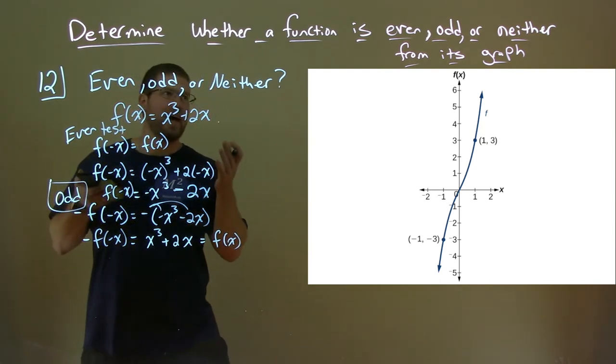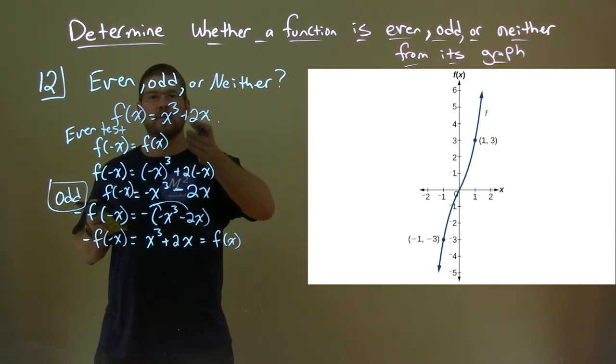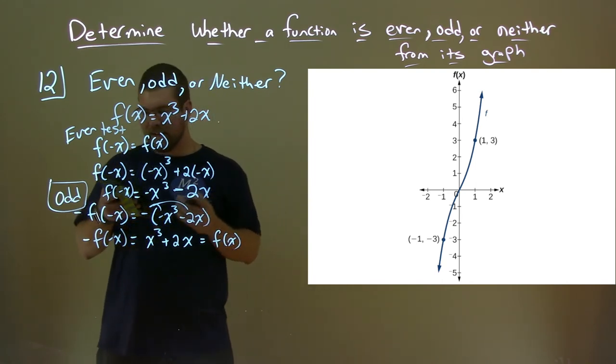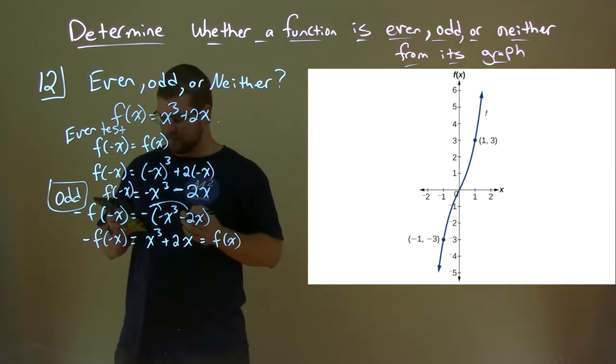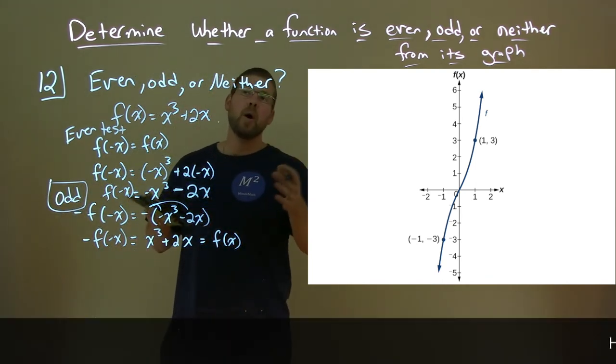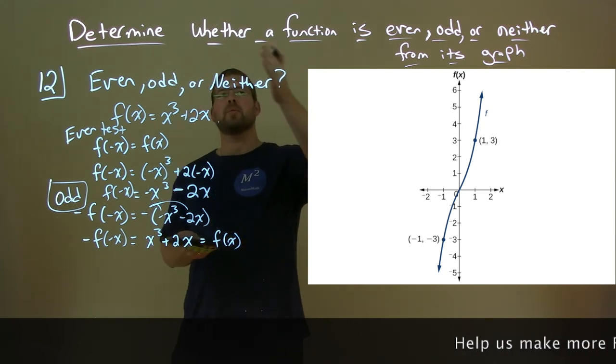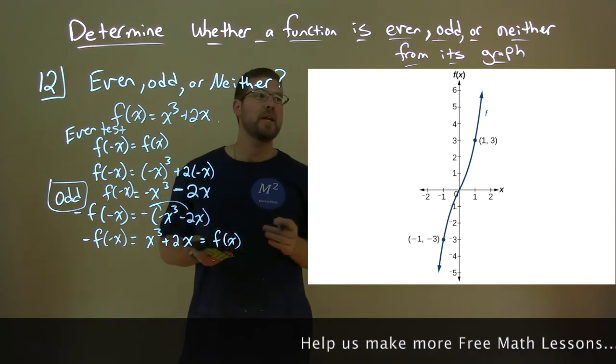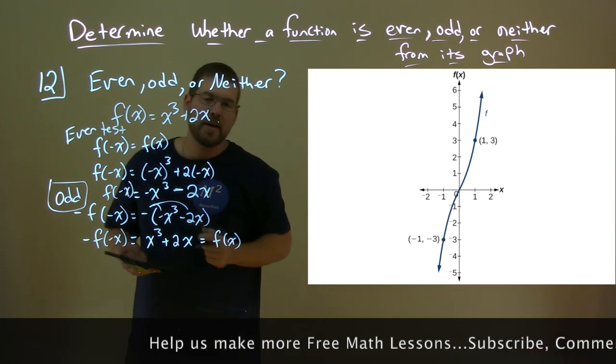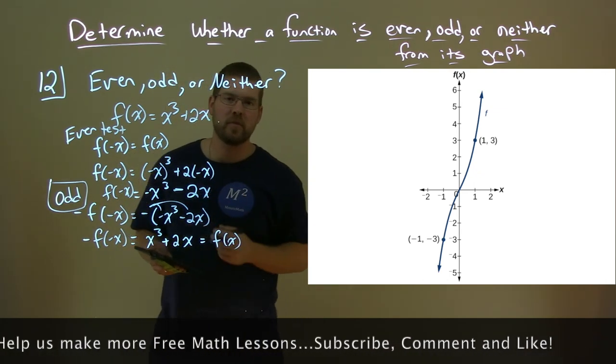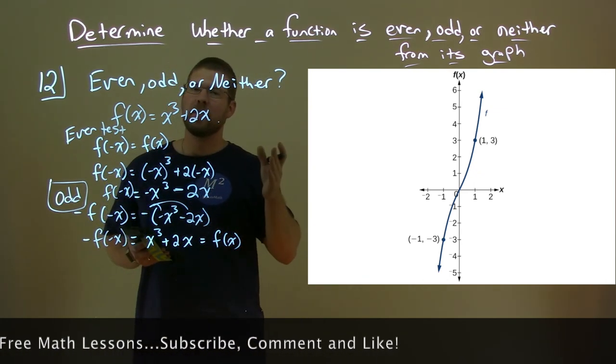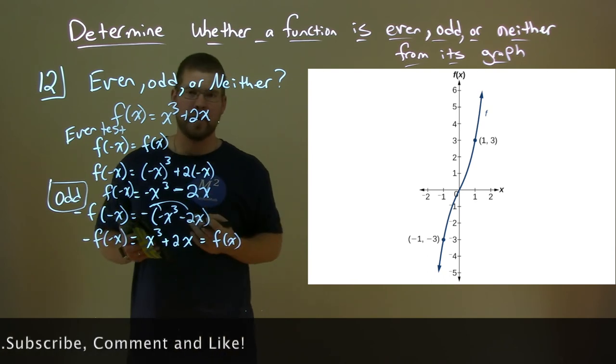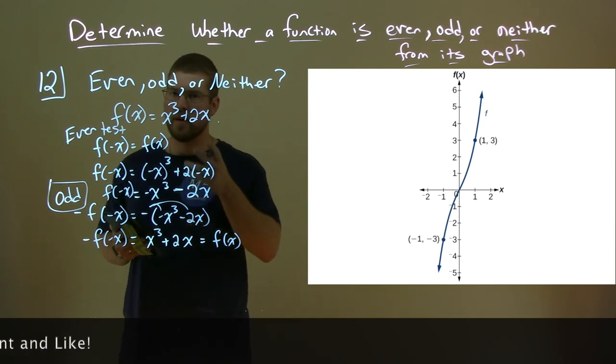So this graph of f(x) = x³ + 2x is an odd function. I hope you learned how to determine whether a function is even, odd, or neither from its graph. If you did, please subscribe to this YouTube channel and like this video. This helps us make more free math lessons for everyone. As always, thanks for watching.